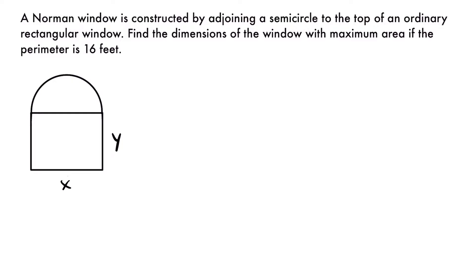We're told what the perimeter is, so we'll be working with a perimeter equation, and we want to maximize the area of the window, so we'll also be working with an area equation. Let's start with the perimeter equation — that is going to be our constraint, or secondary equation, because the perimeter of 16 feet is a fixed value.